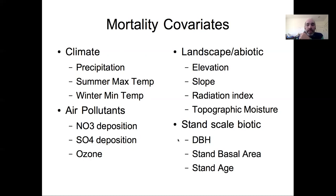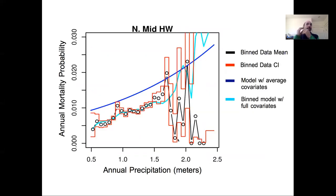For each of those covariates and for each of those different functional types we were able to generate analyses that look like this. To walk you through this, first what I did was bin the data to get an understanding of what the pattern in the data actually looked like. These black circles are the bin means across, in this case, a gradient of precipitation values, and the bin data confidence intervals come from the expectations you would get by fitting the conjugate beta binomial model to the data within that bin, so that's a purely statistical estimate of the mortality probability within that bin.